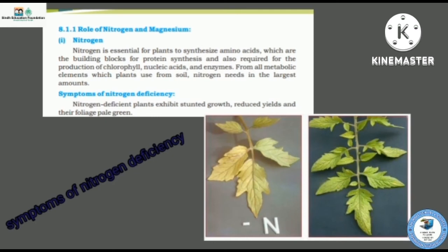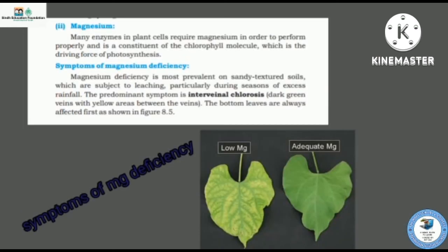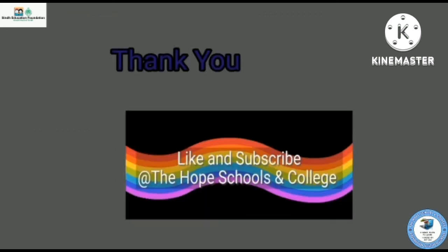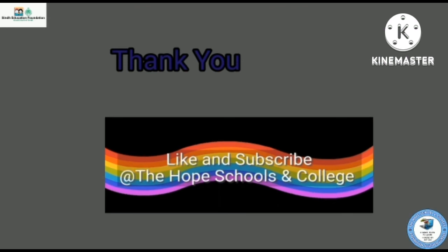The symptoms of nitrogen deficiency include a pale green color in the plant. Magnesium is also important in order to perform the proper function of enzymes. The symptom of magnesium deficiency causes interveinal chlorosis.